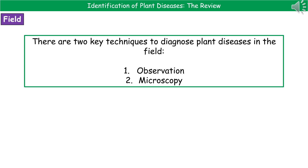Welcome to our review on the identification of plant diseases. The first thing we're going to look at is how we can actually identify these plant diseases in the context of being out in the field. There are two key techniques that we can use to diagnose these plant diseases: the first is observation, and the second is microscopy.